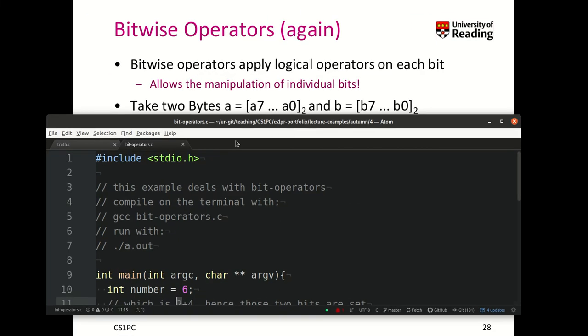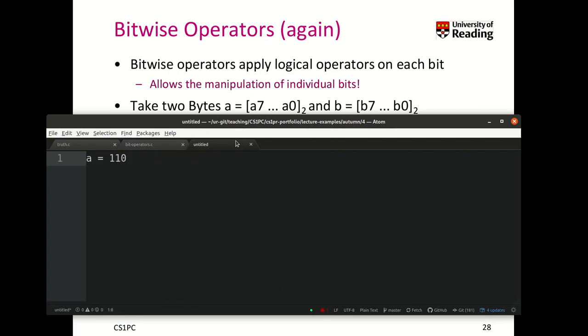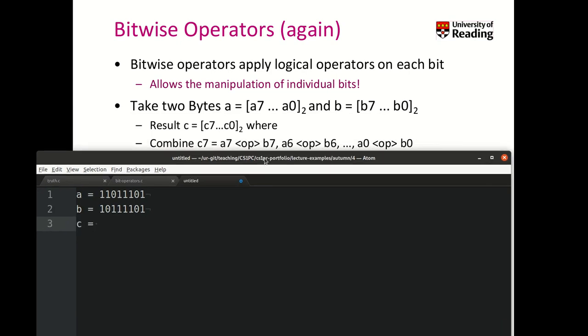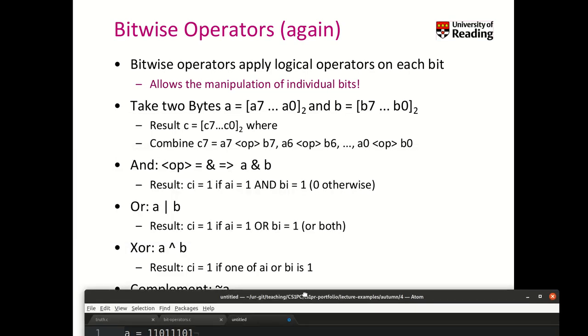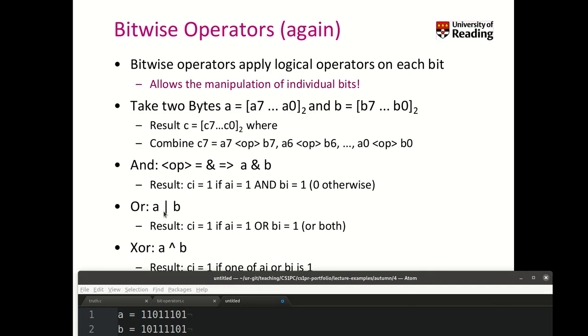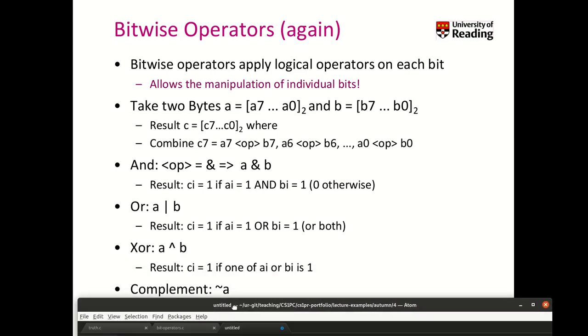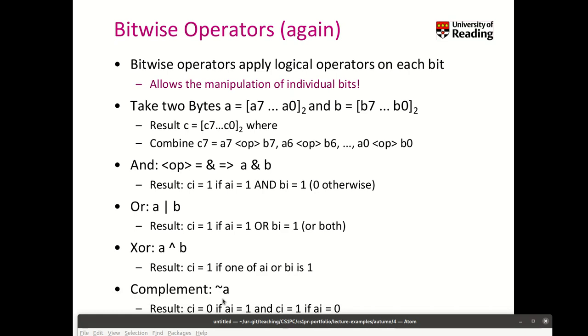What this means is if I take, I can basically say A is this 678, and B is like this number here. And now what we do is we try to create C by combining these bits of A and B. There are three kinds of operators that we can do with two inputs: AND, OR, and XOR. And we have one that is working only on one input, which is the complement. So let's have a look at all of them.